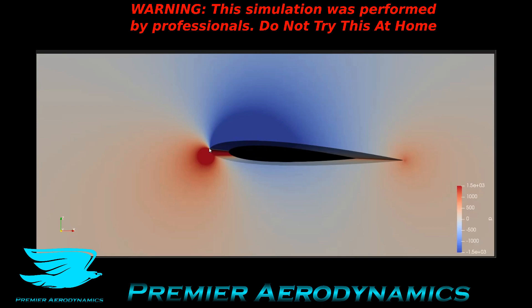So this is at three degrees — we've pitched it slightly — and this is the pressure distribution in a plane cutting through. This is a semi-infinite or infinite wing effectively. First of all, compared to the zero degree angle of attack section which you could see in that playlist, the pressure on top is not symmetric to the pressure underneath, and that's because now the airfoil is producing lift.